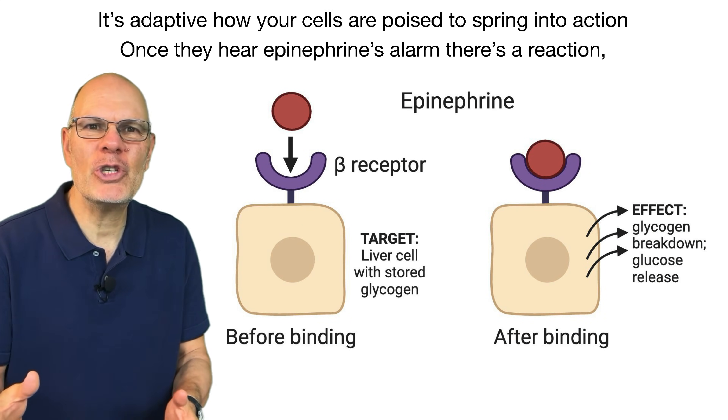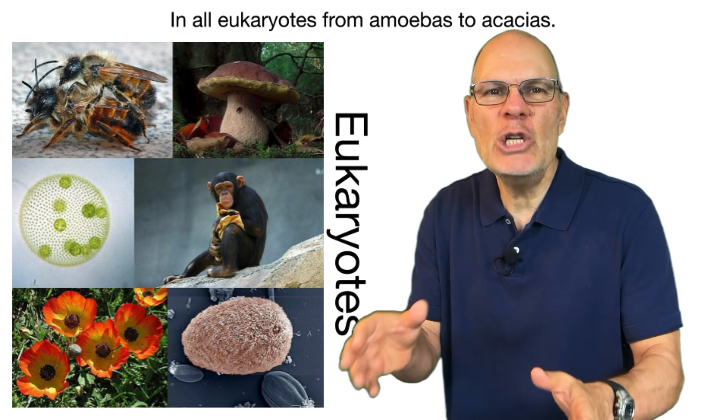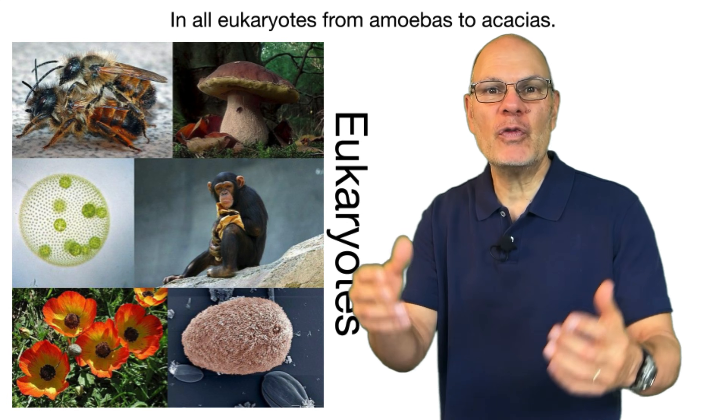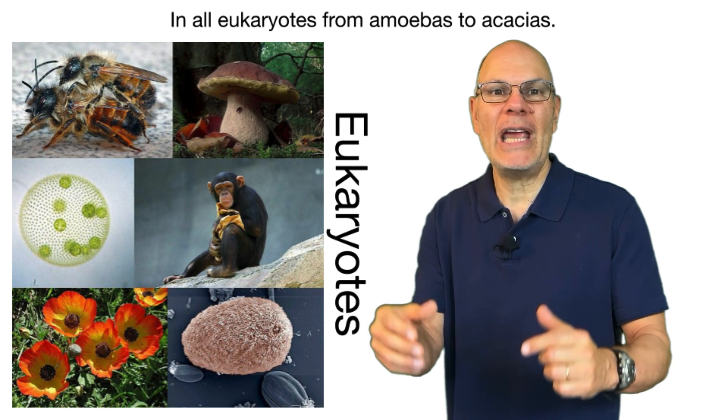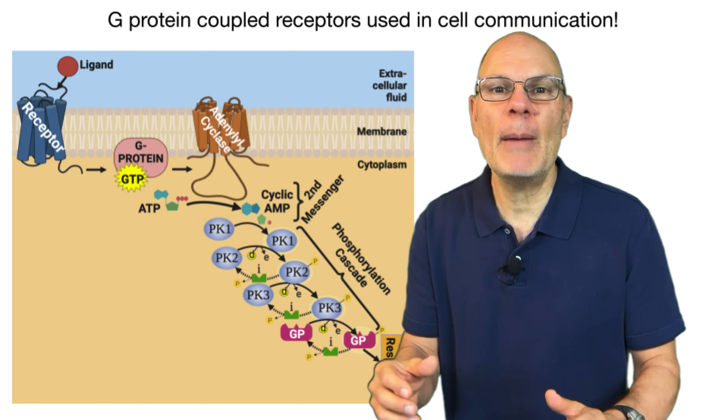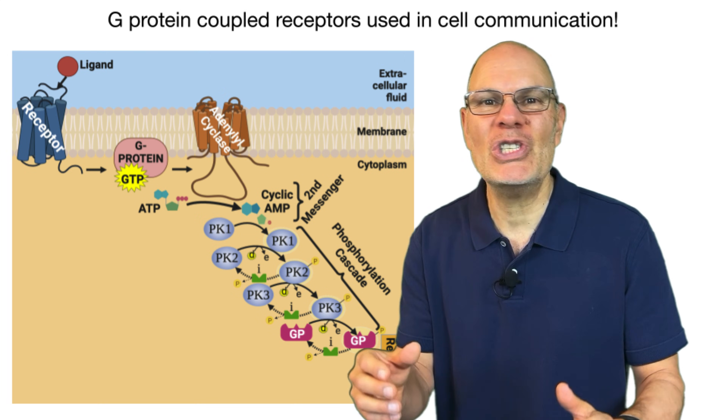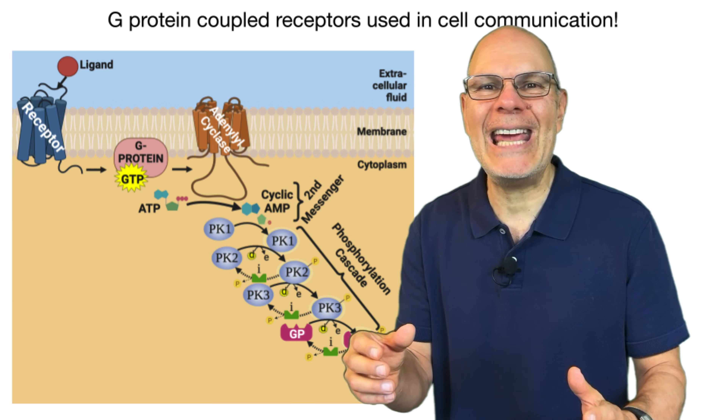Epinephrine signaling is a widespread reaction — in all eukaryotes, from amoebas to acacias, G-protein coupled receptors are used in cell communication.